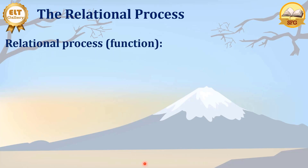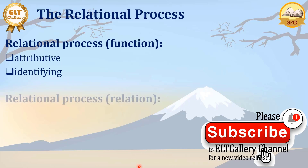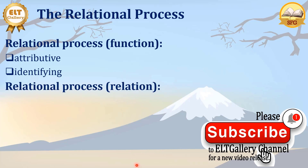Now let's review what we have with the relational process. First we have the function: Attributive and Identifying. Then we have another way of looking at the relational process — the relation of the participants. Here we have Intensive, with the carrier and attribute, where the attribute can be an adjective group or a nominal group, like 'he is sick' or 'he is a good student.' And we have Possessive with 'has' or 'possess' or 'cover' or 'consist.'